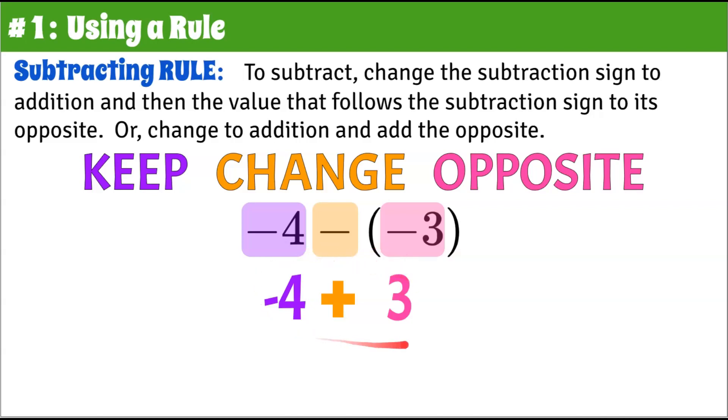That is the same problem as negative four subtract negative three. Much easier to look at this. Negative four add three has a sum of negative one.